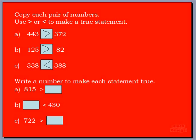Let's do a couple more — write a number to make each statement true. 815 is greater than blank — boys and girls, any number less than 815 will work. I'm going to pick 524. Does that work? 815 is greater than 524 — yes, because our first number has eight hundreds and 524 has five hundreds, so 815 is greater than 524.